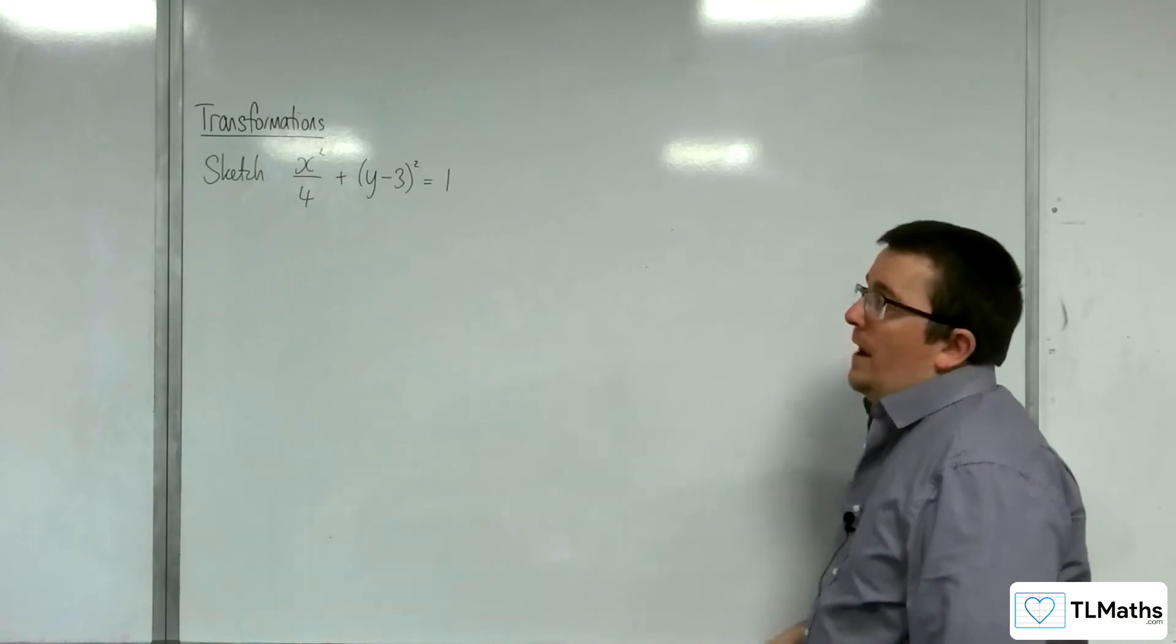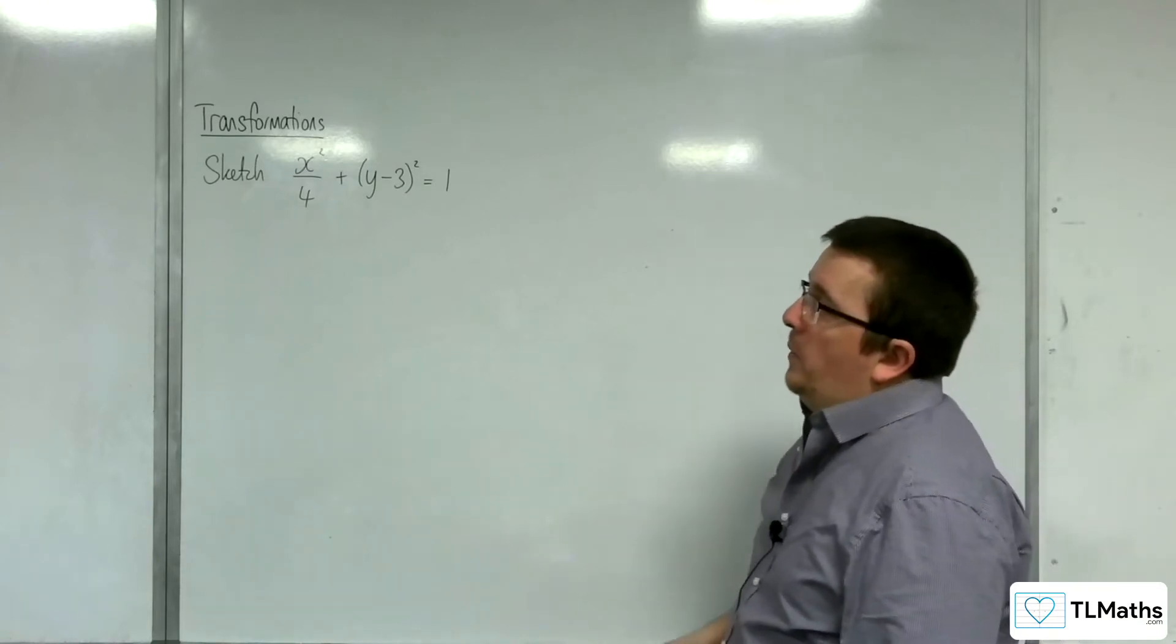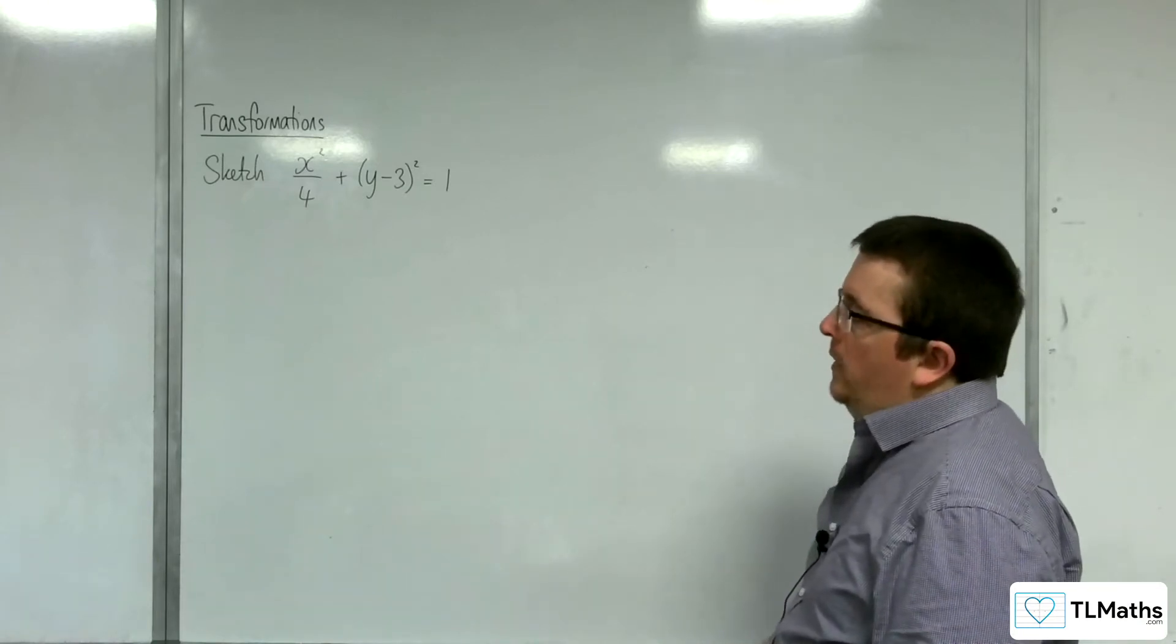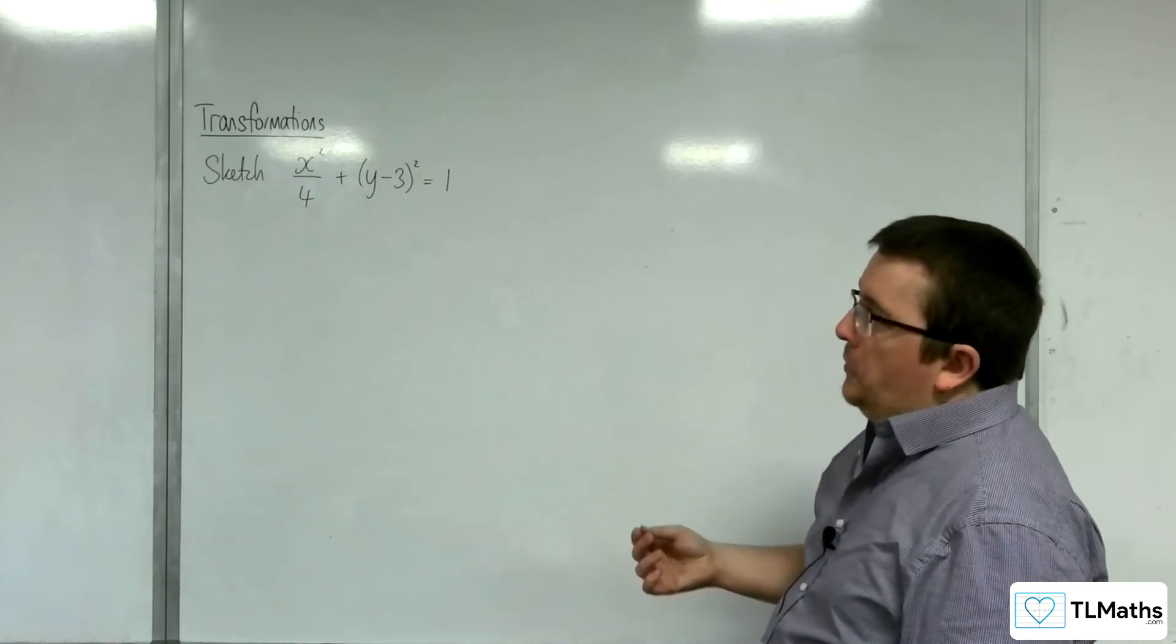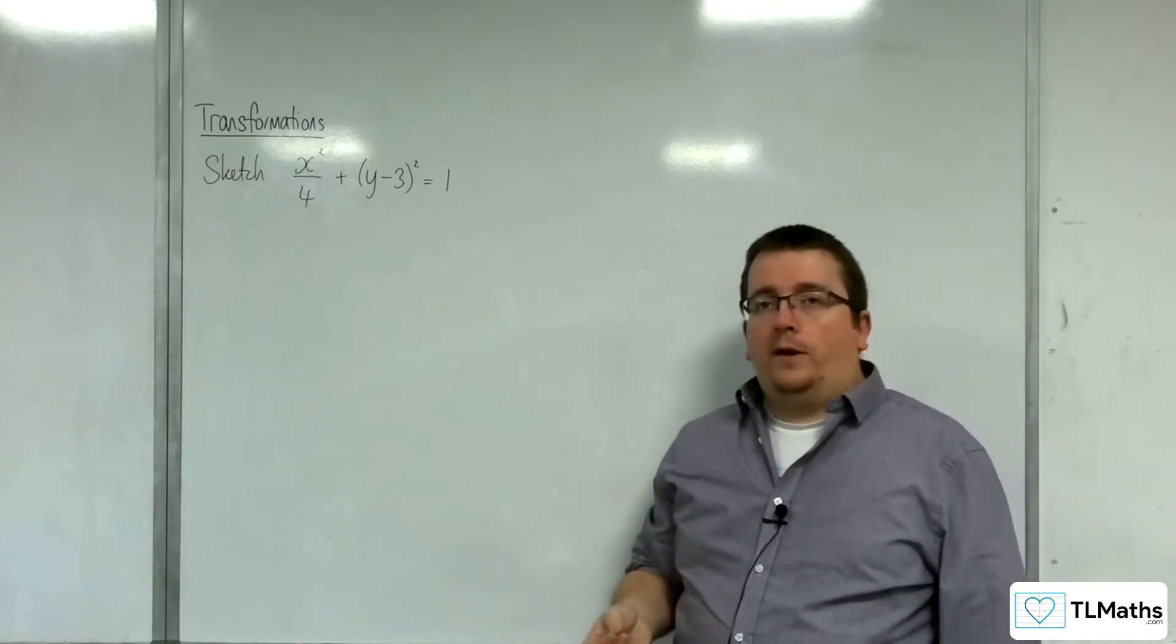OK, so in this video we're going to sketch x squared over 4 plus y take away 3 squared equals 1. Right, now the first thing to do is to identify what type of graph we're looking at.